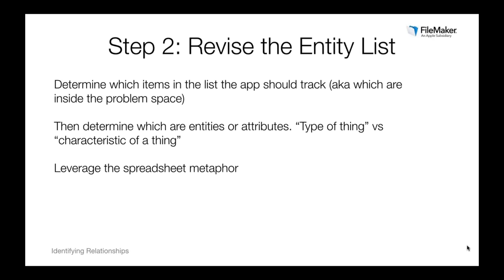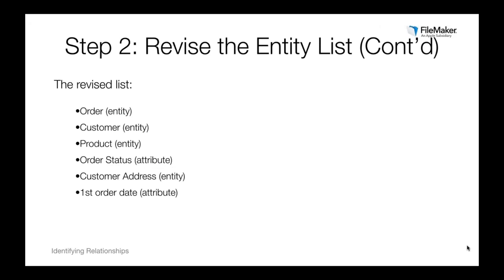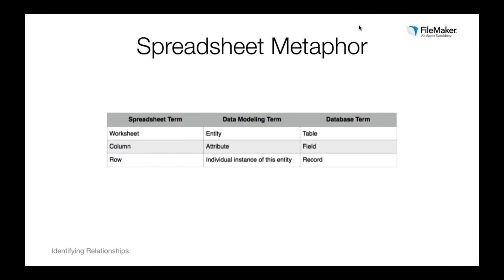One thing you can do to help with the distinction between attributes and entities is to leverage the spreadsheet metaphor. There are three different sets of terms: spreadsheet terms, data modeling terms, and database terms. The data modeling terms are entity, attribute, and instances of an entity — those are what we're using for most of this presentation. The terms FileMaker uses are database terms: table, field, and record. The spreadsheet terms are worksheet, column, and row.